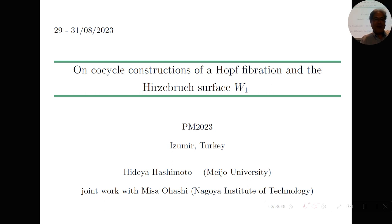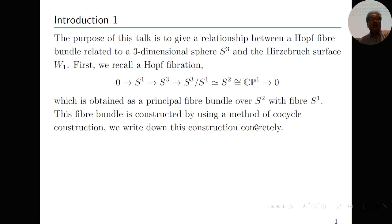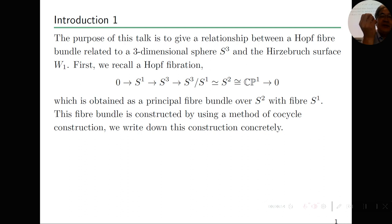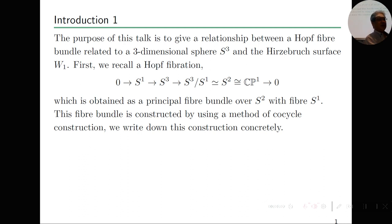First, we define and explain the Hopf fibration. This is a famous mathematical object: the Hopf fibration is a three-dimensional sphere S3, which is an S1-bundle over CP1. CP1 is complex projective one-space, a two-dimensional sphere. It looks like a cylinder — S1 is the base manifold and the fiber is a real line.